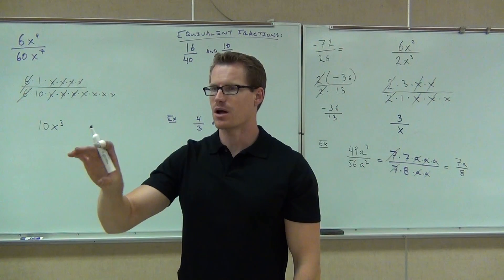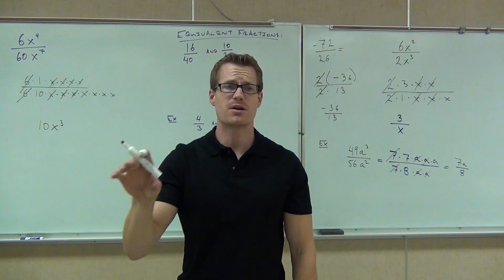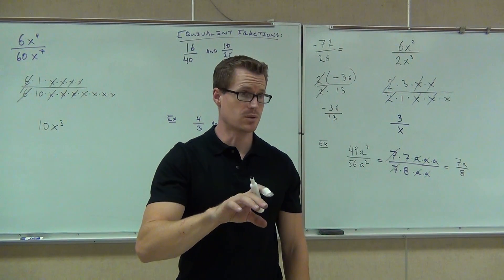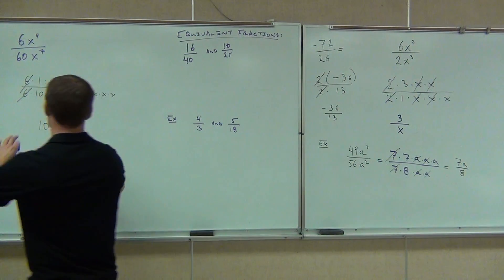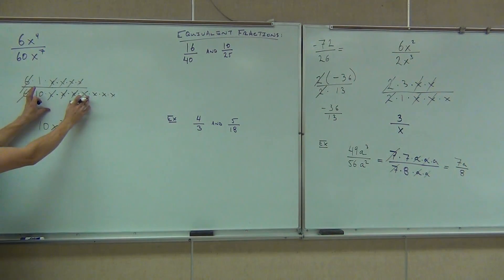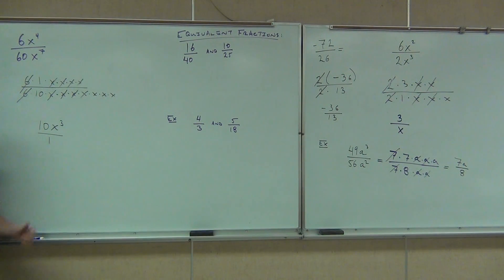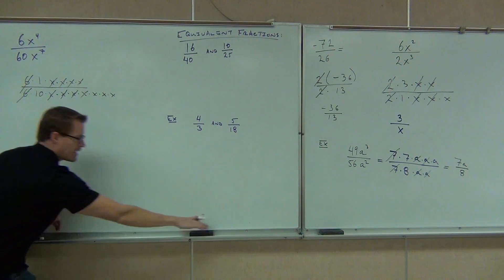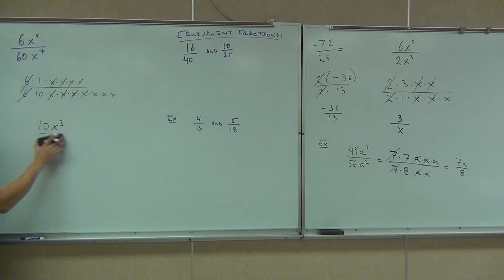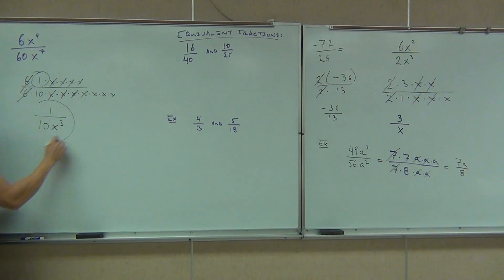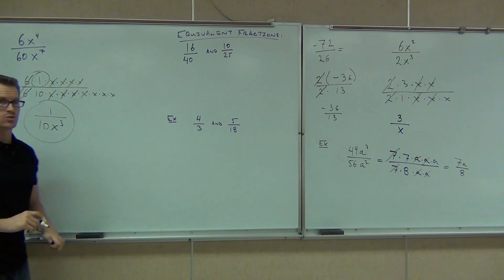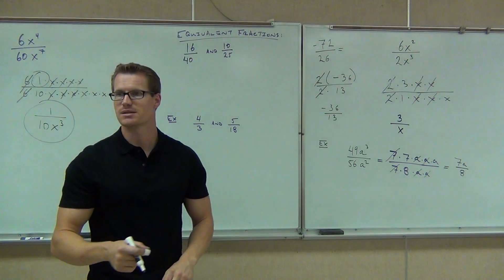If you have something left on the bottom of a fraction, it better darn well be on the bottom of a fraction when you get done. You cannot just magically have this thing down here and all of a sudden it's over one. What's left on the top if you cross everything out? One over 10x to the third — you got a one. That's your answer: one over 10x to the third.